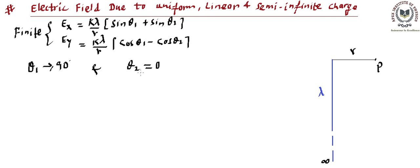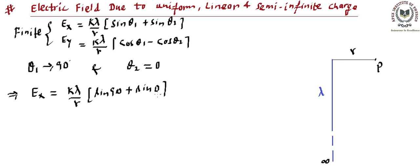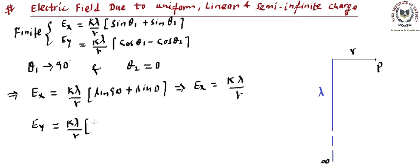Substituting these values for the semi-infinite linear uniform charge: Ex equals k lambda upon r times (sin 90° plus sin 0°). Since sin 0° is 0 and sin 90° is 1, Ex comes out to be k lambda upon r. For the Ey component: k lambda upon r times (cos 90° minus cos 0°) equals k lambda upon r times (0 minus 1), so Ey equals minus k lambda upon r.